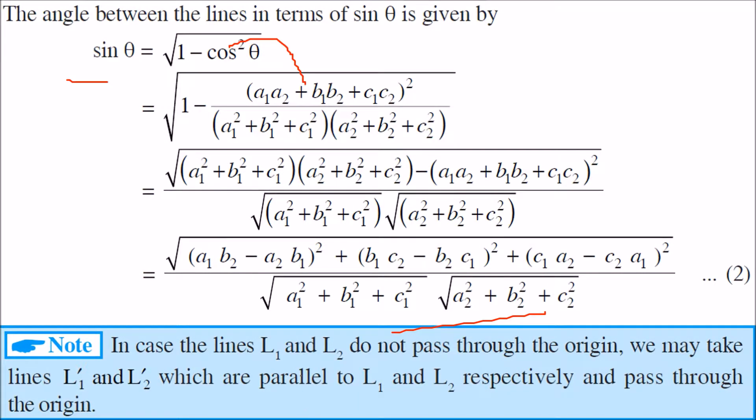If L1 and L2 are not passing through origin, we can take L1 dash and L2 dash which are parallel to L1 and L2 and pass through the origin.